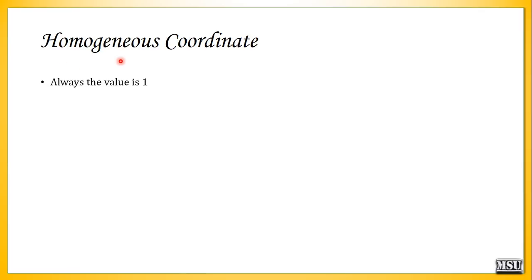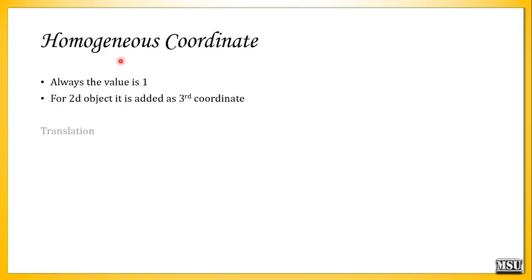The homogeneous coordinate always has the value 1, so we are not going to calculate any new value for it. For a 2D object, it is added as a third coordinate — along with the x and y axis values. For a 3D object, it is added as a fourth coordinate.